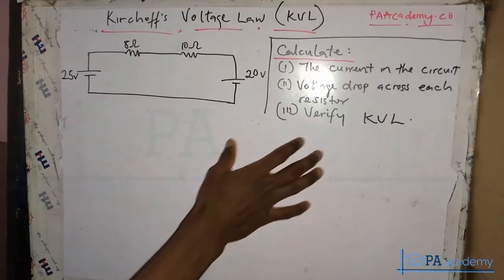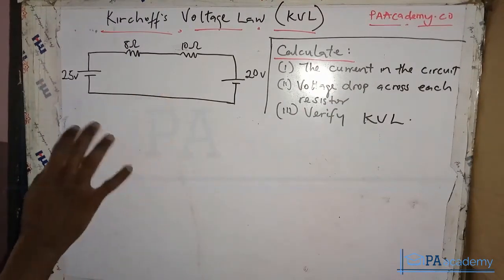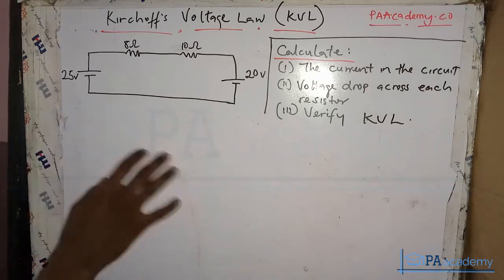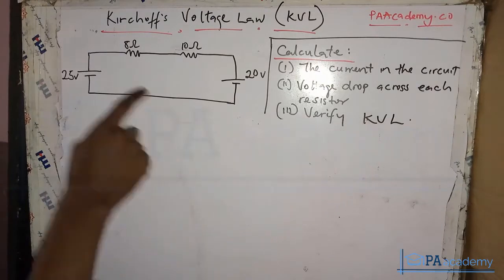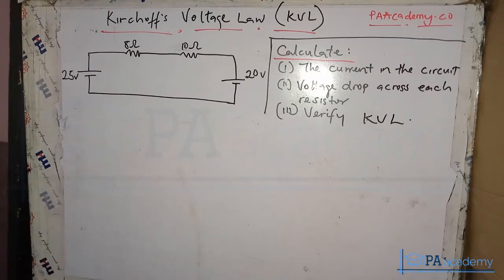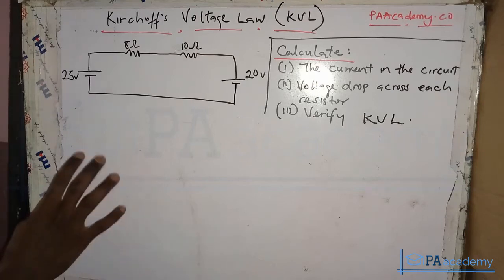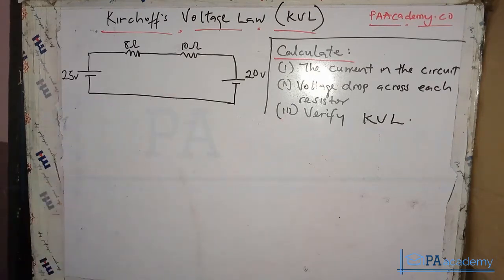In this circuit we are given three questions. The first says to calculate the current in the circuit using Kirchhoff's Voltage Law. The second asks us to calculate the voltage drop across each resistor — across the 8-ohm resistor and the 10-ohm resistor. The third asks us to verify Kirchhoff's Voltage Law, which states that the algebraic sum of all voltages around any closed loop in a circuit equals zero. We are going to verify that statement with respect to this particular circuit.